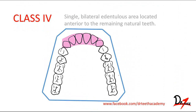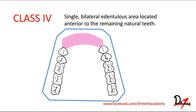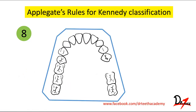Class IV is a single bilateral edentulous area located anterior to the remaining natural teeth. Here you can see you don't have any remaining natural teeth anteriorly — this is Class IV. Now, Applegate was a person who gave some rules for Kennedy's classification to make things simpler and more significant when applied in clinical life. He gave eight rules.